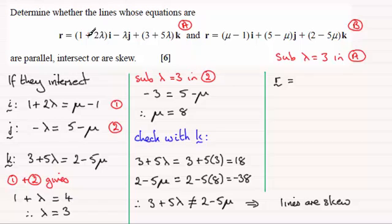λ = 3 into here, so -3j. And when λ is 3 here, 5×3 = 15 + 3 = 18, so +18k.